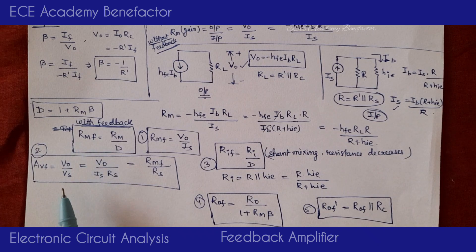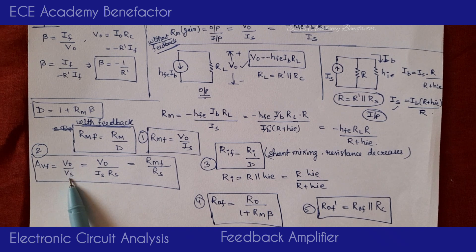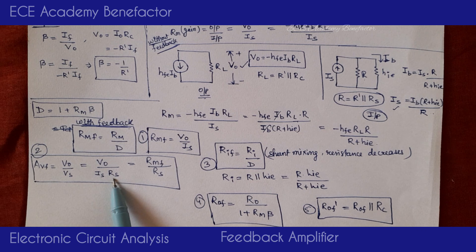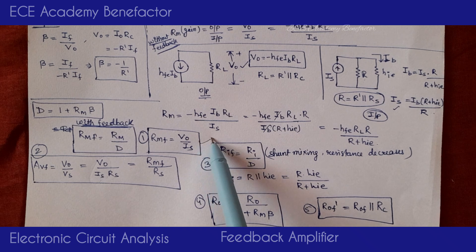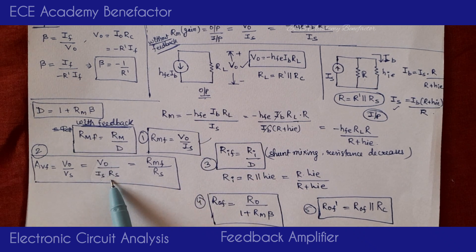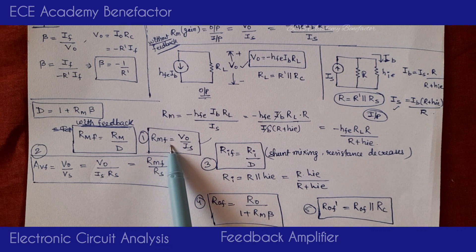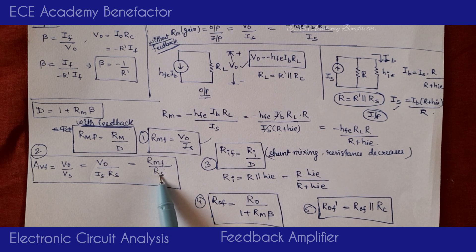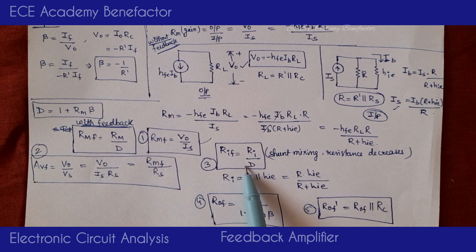The next parameter is voltage gain with feedback AVF = V0 / VS. The input voltage VS = IS × RS, so V0/IS = RMF. Therefore AVF = V0/VS = RMF / RS. Once RMF is computed, substitute it here along with the given RS value to obtain AVF.